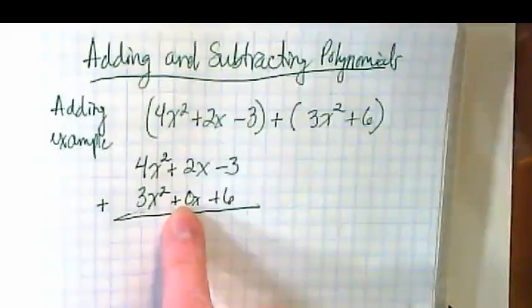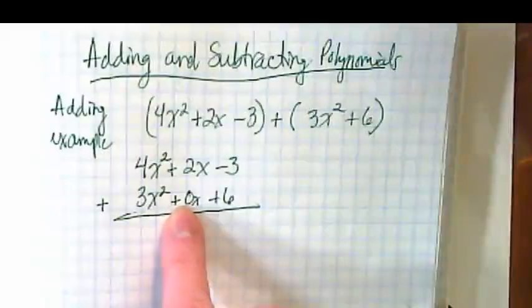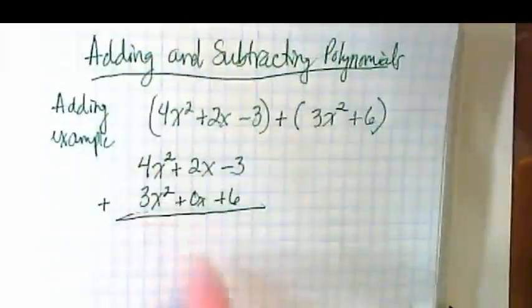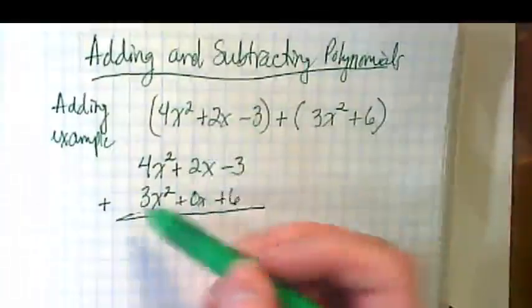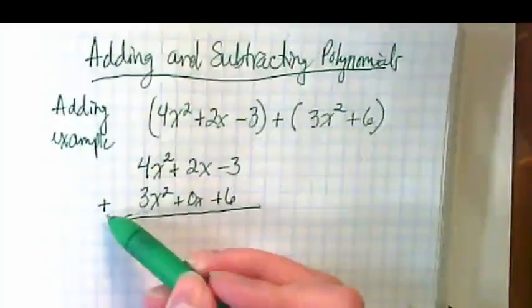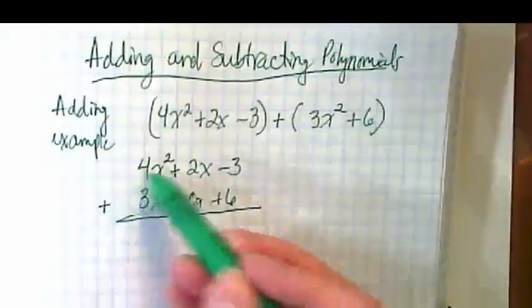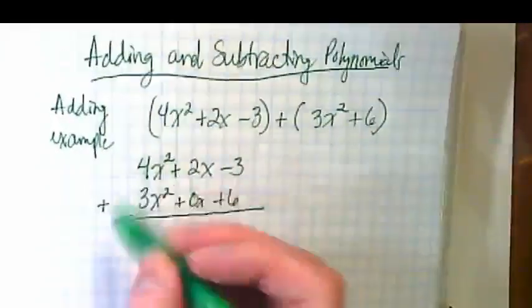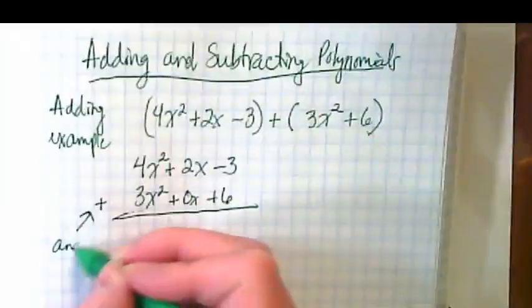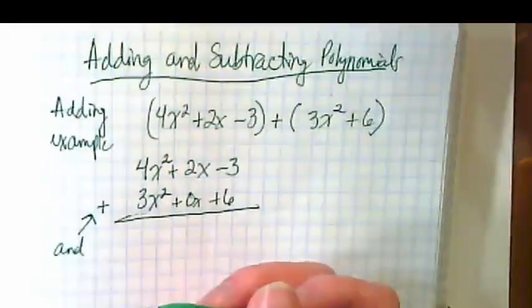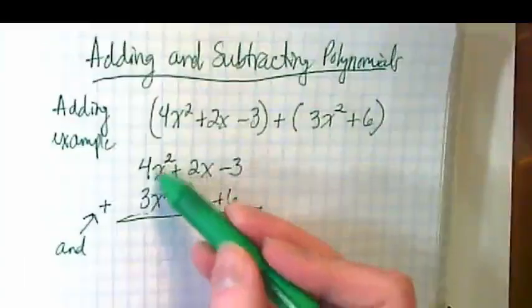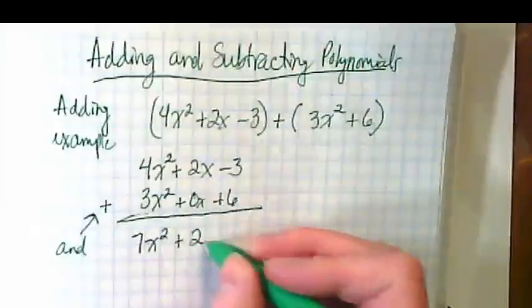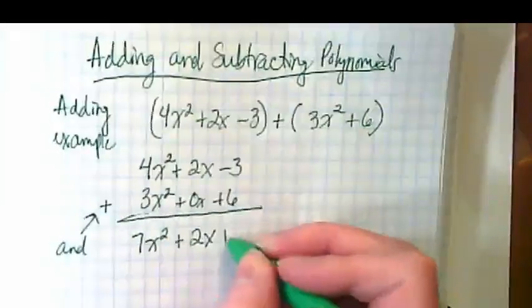We found the other day in our first intro to this that zeros are important. It holds that place so we don't accidentally combine things in the wrong way. Then notice I drew my line and I put the plus sign over here to show that I'm combining these. Remember a plus sign is very much just like saying 'and'. What happens when I add these? We get 7x² + 2x + 3.